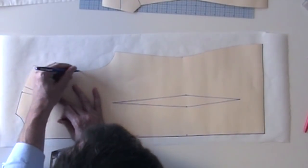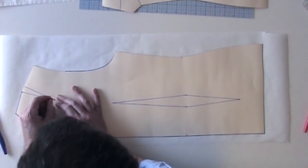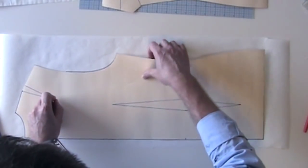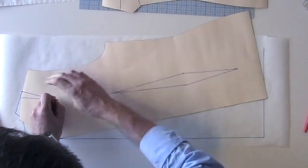I'm going to draw a little bit of my armhole. And I'm going to close the dart of the shoulder and open it at the armhole.